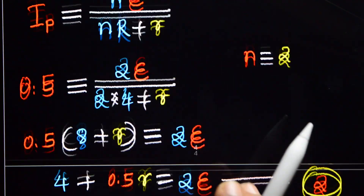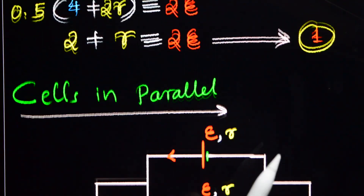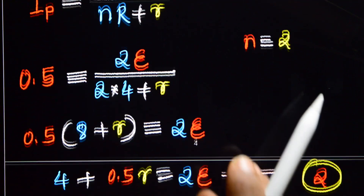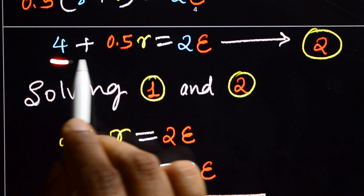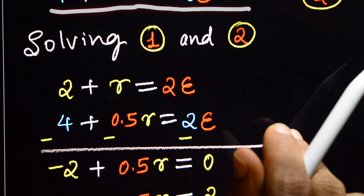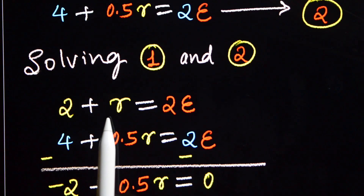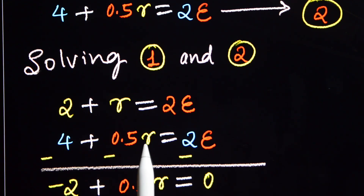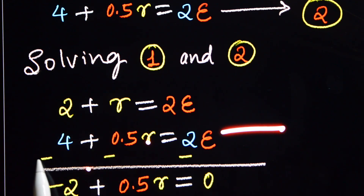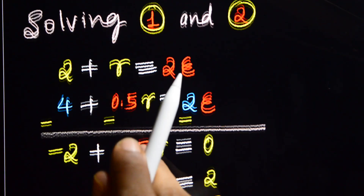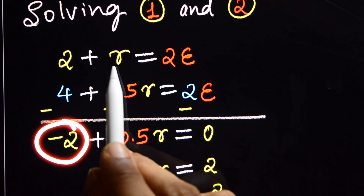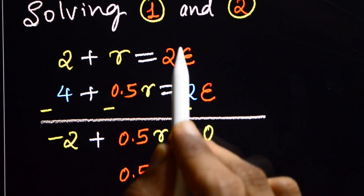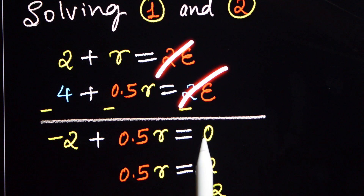Now solving equations 1 and 2 simultaneously. Equation 1: 2 plus r equals 2E. Equation 2: 4 plus 0.5r equals 2E. Subtracting equation 2 from equation 1: 2 minus 4 gives minus 2, and r minus 0.5r gives 0.5r, while 2E minus 2E cancels to give 0.